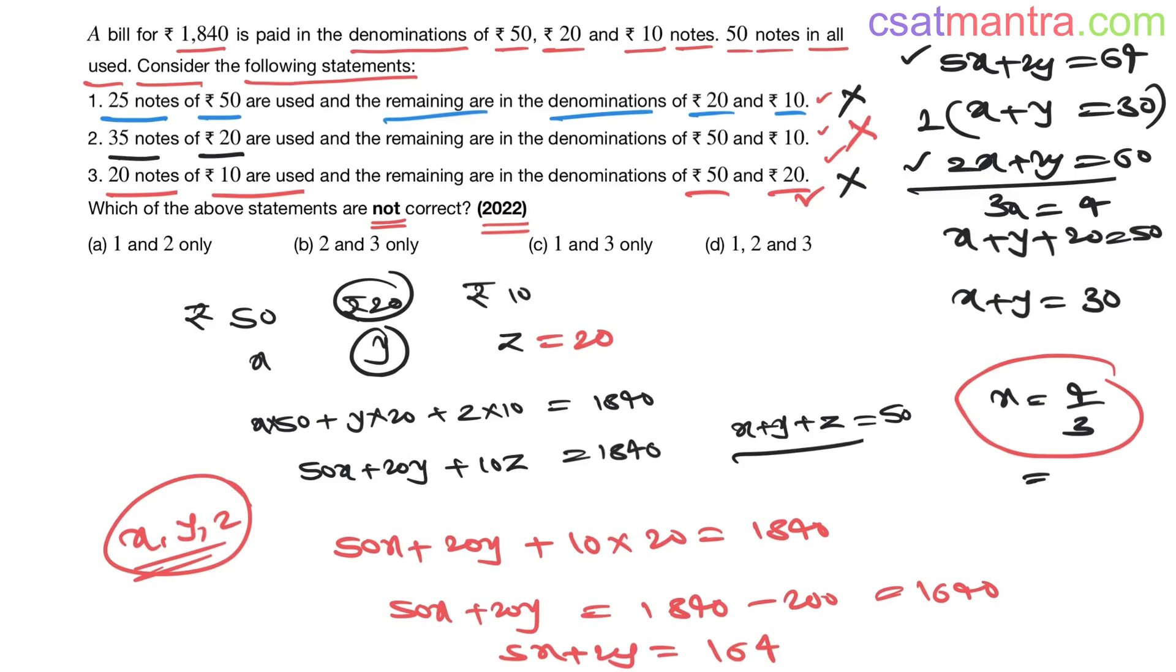Statement 3 we got fraction, statement 2 also we got decimal points, this is not possible. Statement 1 the sum is exceeding 50 number of notes. So all are incorrect, answer D. Not a brainy question, just the equation: number of denominations into the value is the total amount, and number of notes is 50. Just made use of the information given in these equations. Hope this is clear.